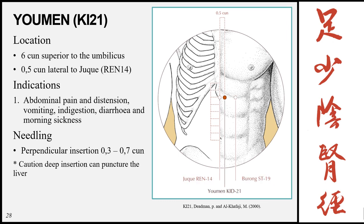Youmen, Kidney 21, is located 6 cun superior to the umbilicus, 0.5 cun lateral to Juque (Ren 14). Indications: abdominal pain and distension, vomiting, indigestion, diarrhea, and morning sickness. The insertion is 0.3 to 0.7 cun — note this is different from all previous points which could go 0.5 to 1 cun. There is also a caution against deep insertions as these have a chance of puncturing the liver.